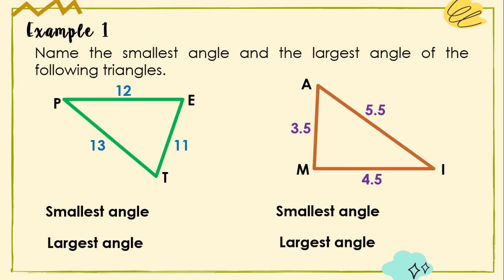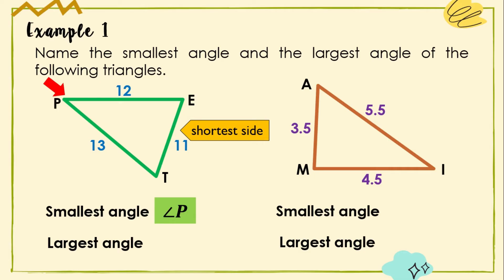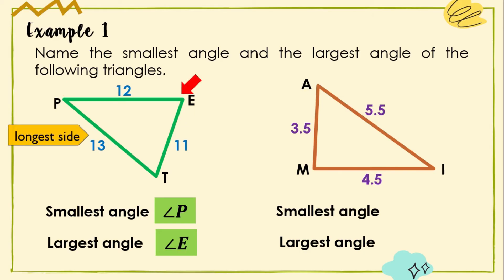Let us have our first example using Triangle Inequality Theorem 1. Name the smallest angle and the largest angle of the following triangles. Triangle PET has side lengths: ET = 11, PE = 12, and PT = 13. Angle P is the smallest angle since it is opposite the shortest side ET. The largest angle is Angle E since it is opposite the longest side PT.